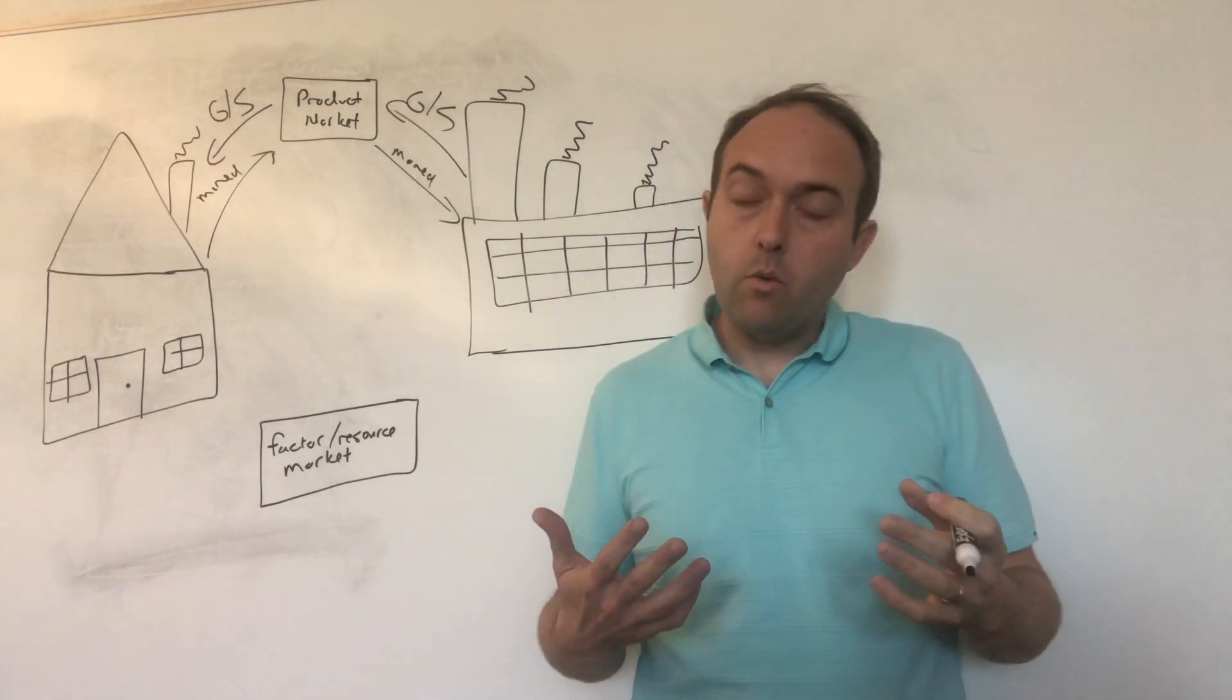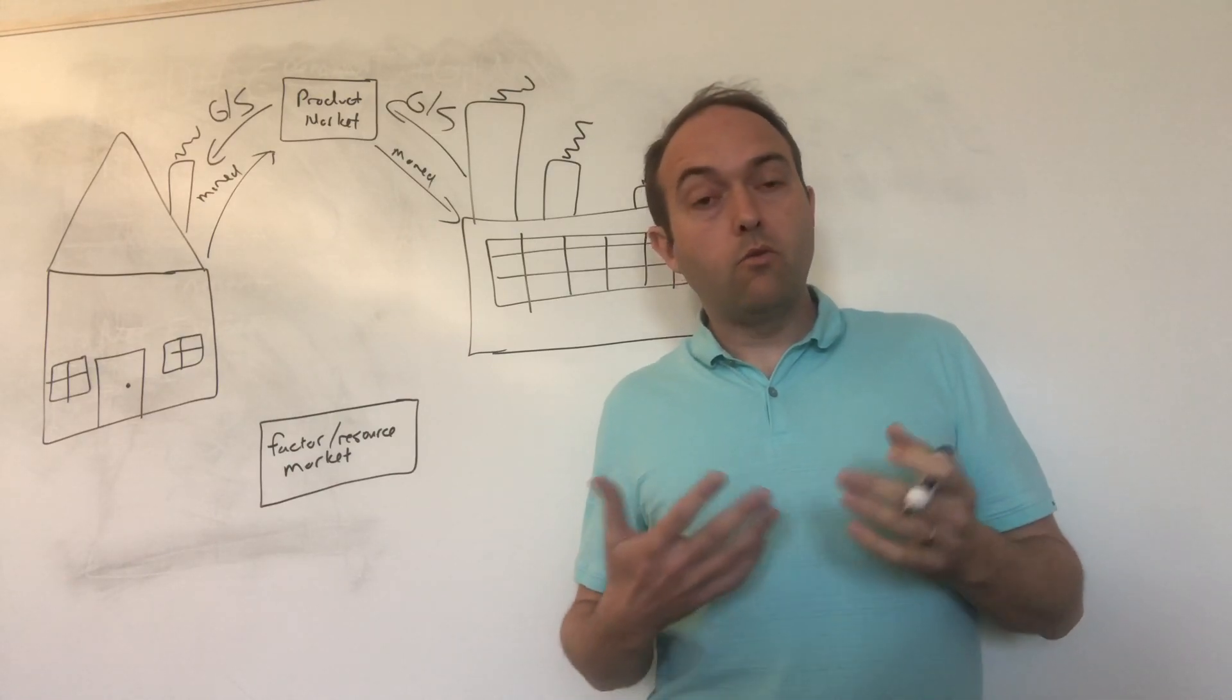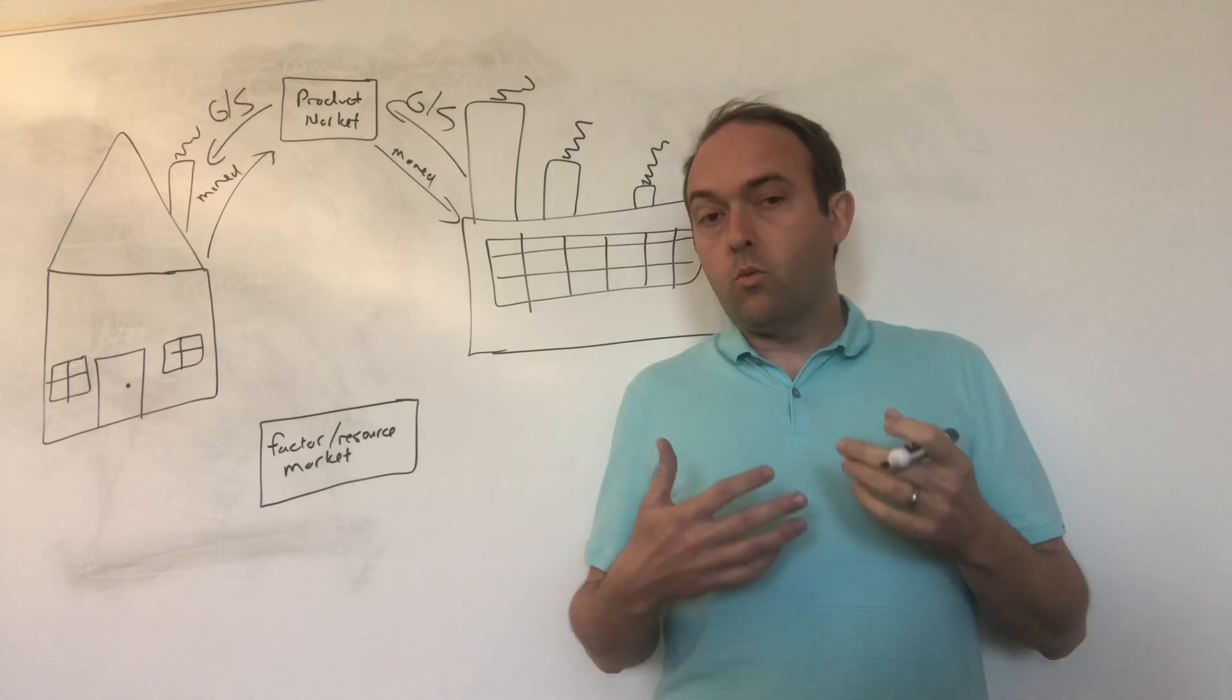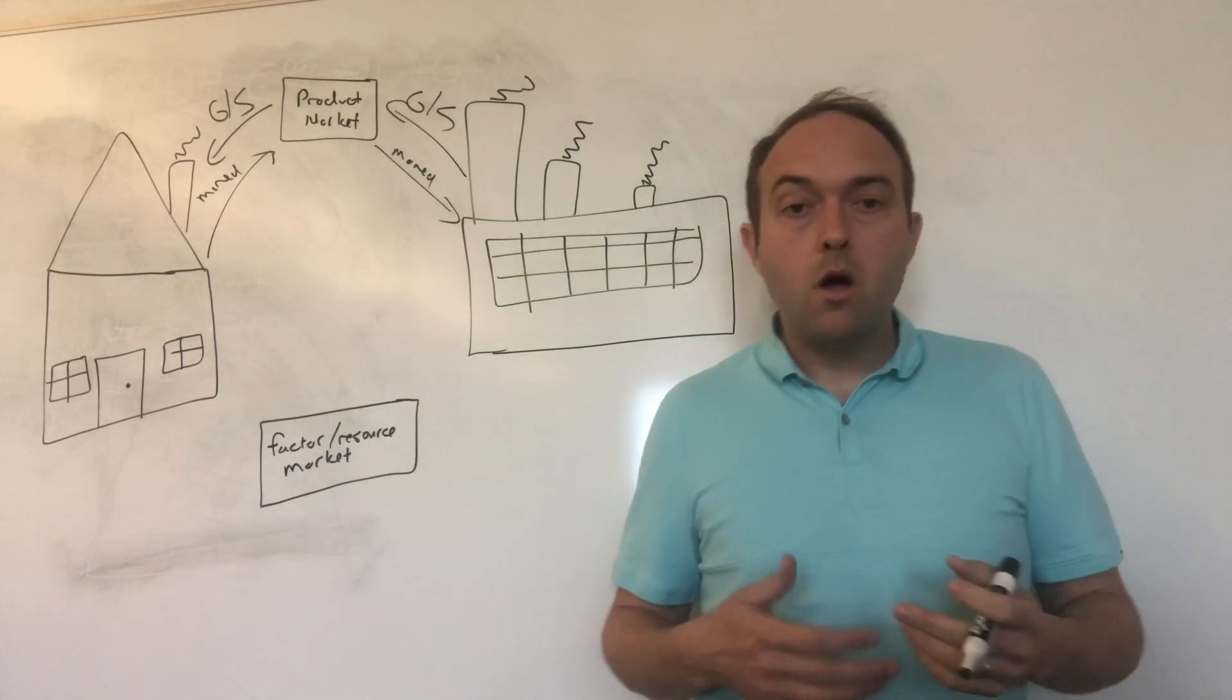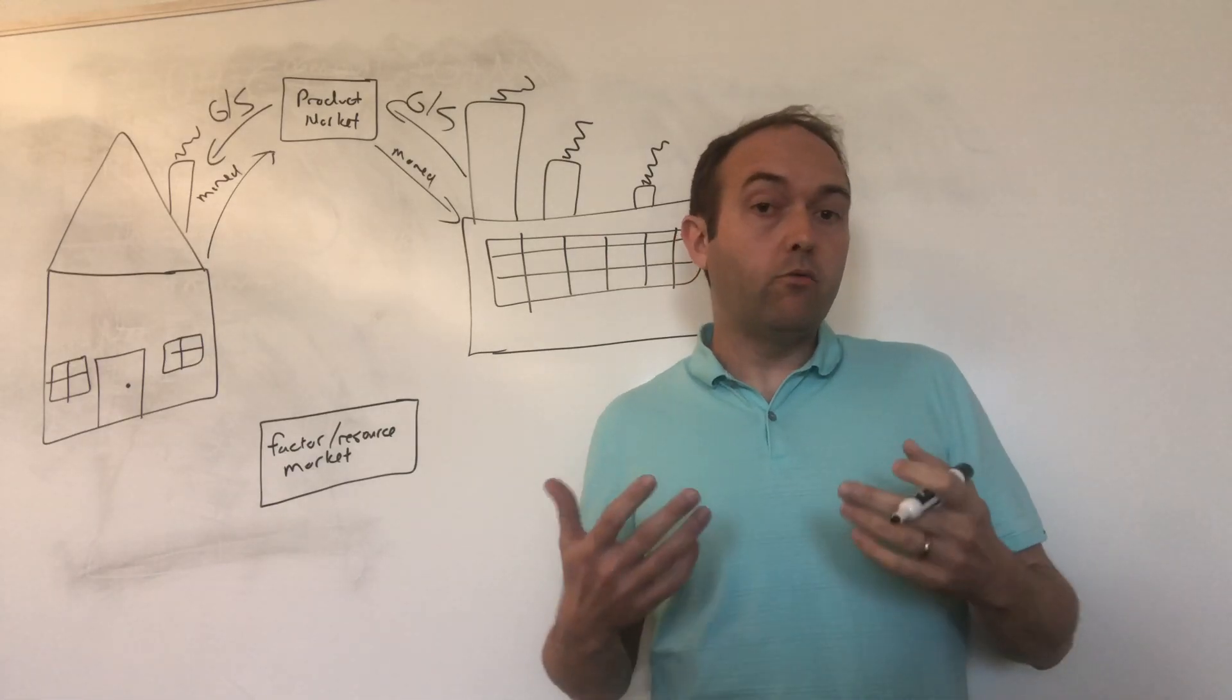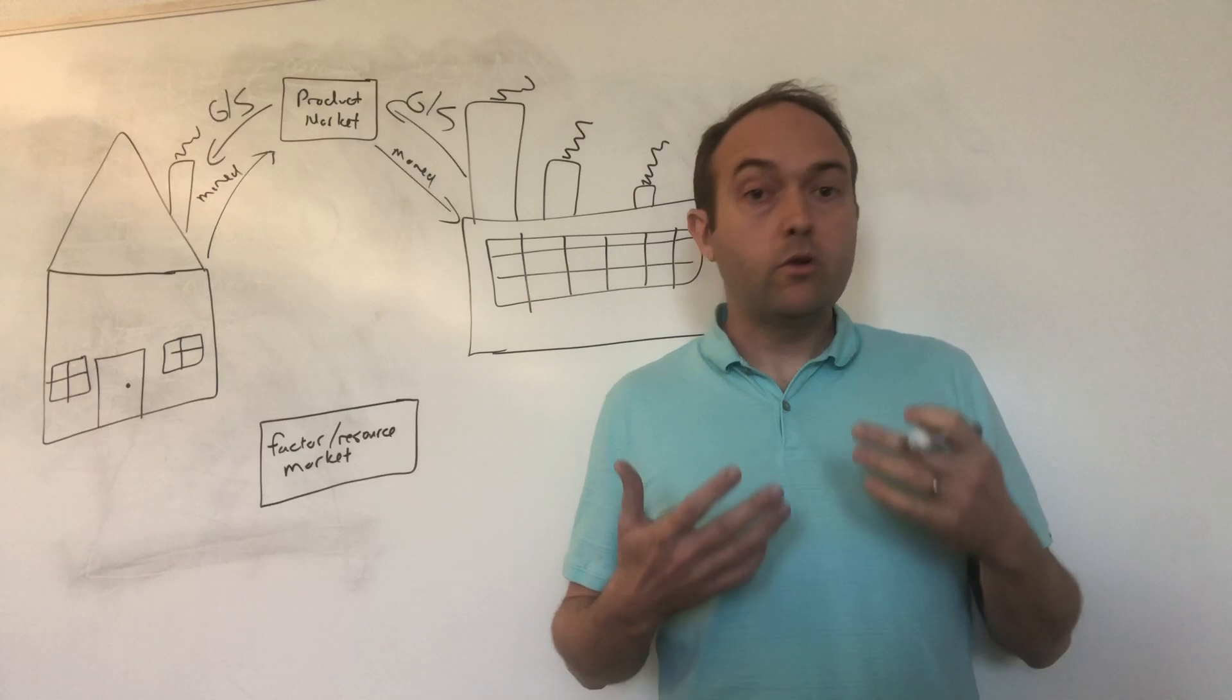But it's not the only way. You see, firms also need to get resources in order to make those goods and services. So in the circular flow diagram, we think about households as being the owners of resources. And they will sometimes sell those resources to firms.